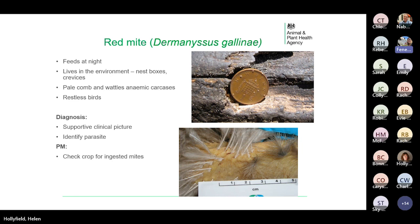Red mite is a common external parasite that feeds by sucking blood, mainly at night. The majority of the mite population live in the bird's environment and red mite can be a particular problem in birds housed in wooden sheds. You need to look in the dark cracks and crevices of the shed to find the mites — a torch is helpful. Newly hatched nymphs are small and pale. The mites are red, about 0.7 millimetres long, and if you look carefully you'll see them moving. The bottom picture shows red specks on the skin between the feathers.